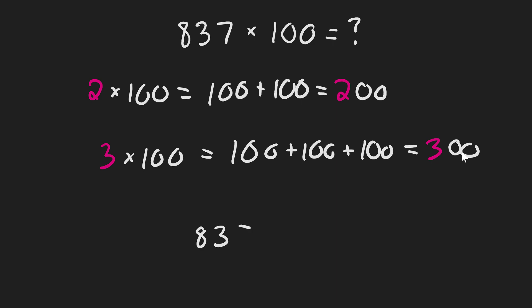So 837 times 100 is just 837 with two zeros appended to the end of it. Or in other words, 83,700.